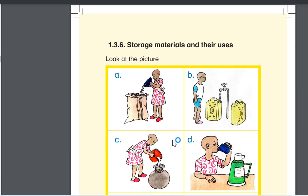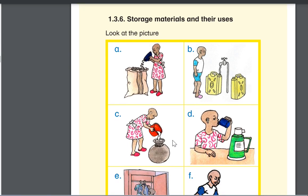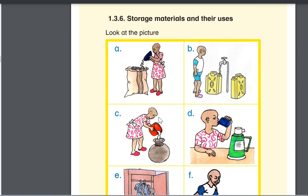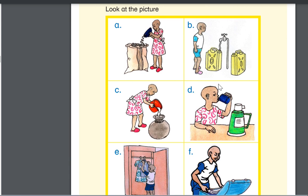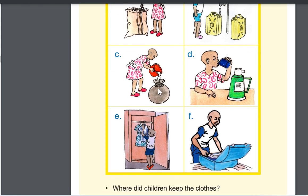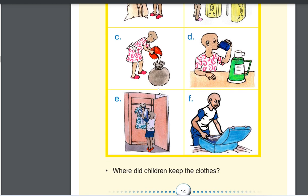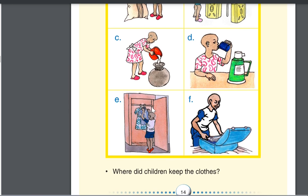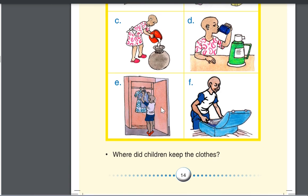When you go to storage materials, you can see that in the picture you have the sack where they are keeping beans, you have the jerry can where they keep water, you have the flask where they keep hot drinks like porridge, tea and others. You can see that they have the pot where they are storing water, the wardrobe where they keep clothes, and here we have the suitcase where to keep clothes.